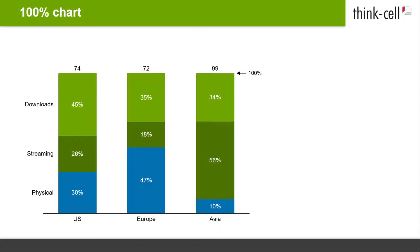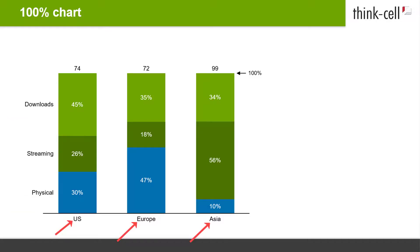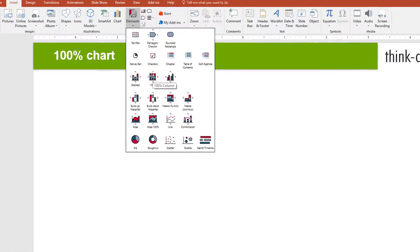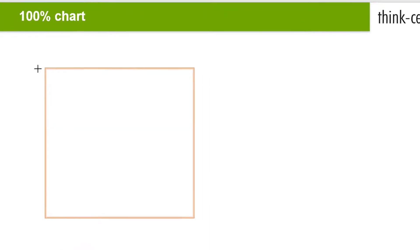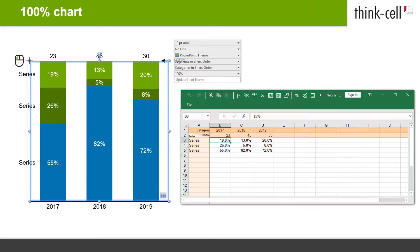Finally, let's have a look at the 100% chart. It is a variation of a stacked chart with all columns typically adding up to the same height — 100%. It can be used to compare different categories with each other, for example the sales of certain products within particular geographical regions. Open the Elements menu and look for the 100% chart icon. Decide which orientation your chart should have and click on the corresponding arrow, then click again to place the chart on the slide.